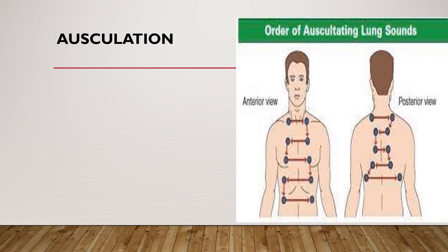For auscultation, the cries of the baby may be frustrating for beginners, as young children do not cooperate when asked to breathe deeply. However, during crying, the student should synchronize listening with the inspiratory phase when the baby is taking a deep breath before the next episode of crying. Normal breath sounds include bronchial breath sounds over the trachea and major airways; over the rest of the lung fields, the sounds are mostly vesicular or bronchovesicular.